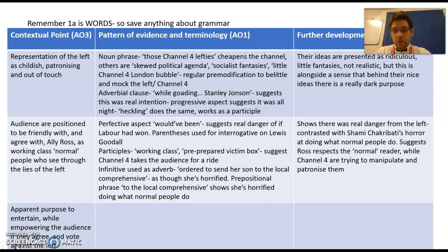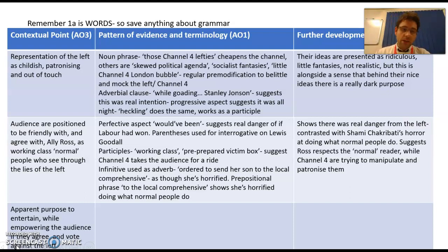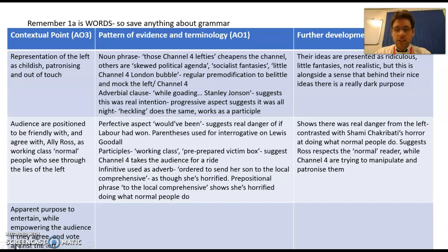There's the fact that they position the audience to be friendly with Ali Ross and already agree with him, suggesting the audience are sensible people who understand politics, are probably working class, and see through this 'London bubble' as it's described. And there's also this apparent purpose to entertain - Ali Ross writes in quite an entertaining way, but there's also a real power play. He empowers the audience, but only if they agree with him. So those are the three contextual factors.